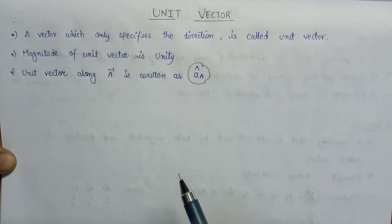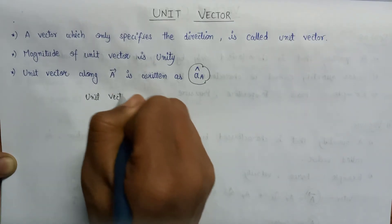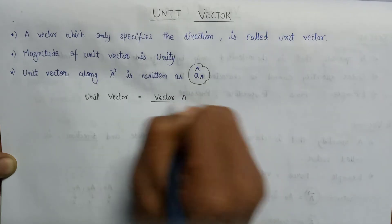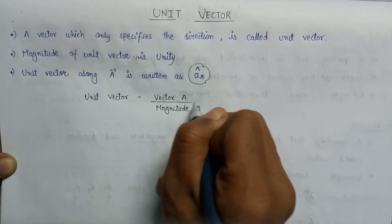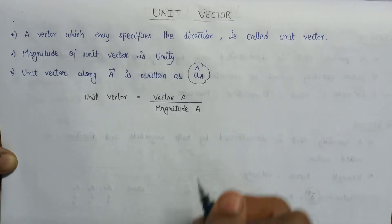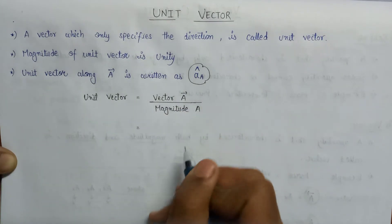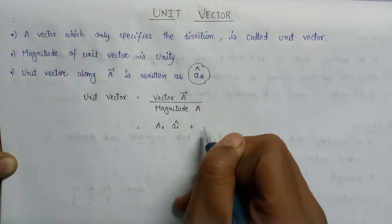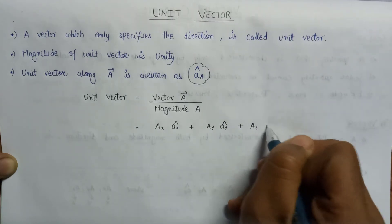Now let us talk about the representation of unit vector. The unit vector is represented as the vector of A over the magnitude of A. As discussed in the earlier lecture, the A vector is represented as: A = ax·(ax-cap) + ay·(ay-cap) + az·(az-cap).